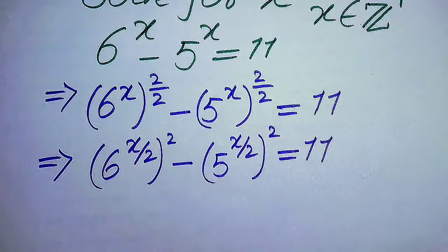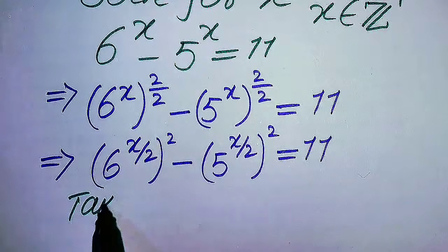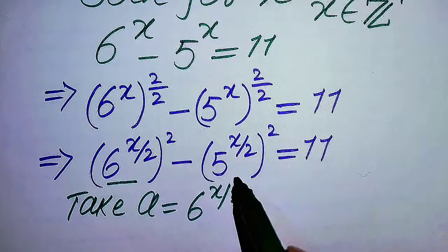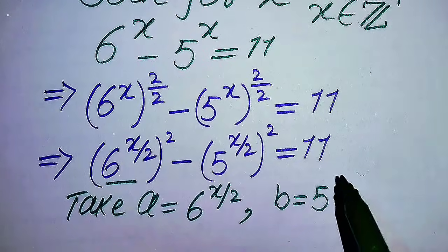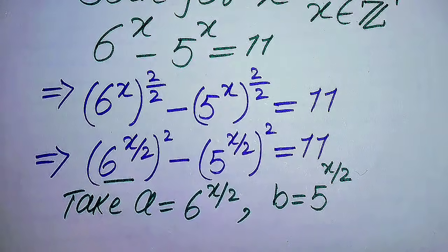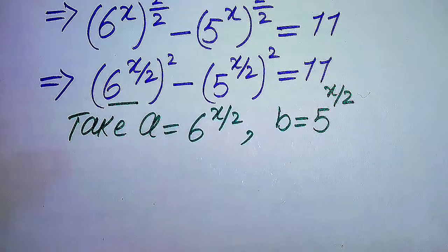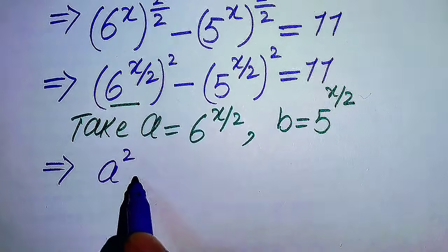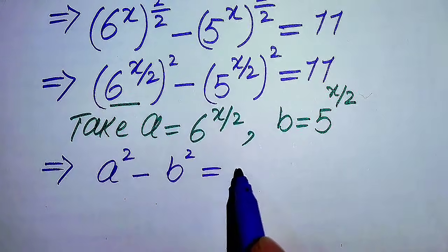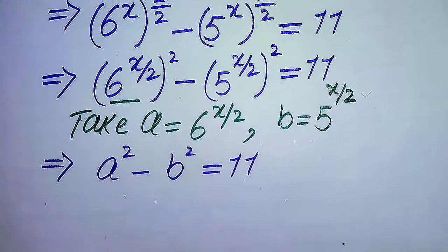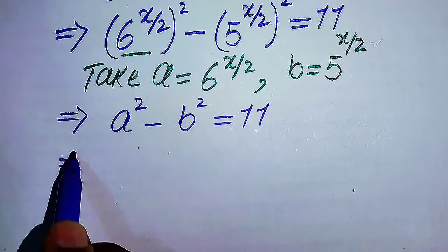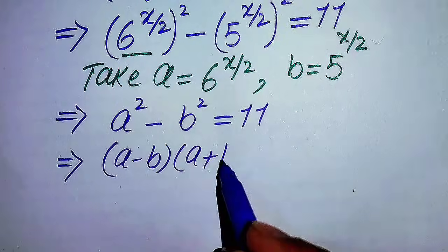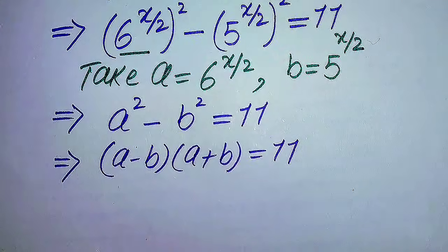Now we convert this exponential equation into a polynomial of two variables. We let a equal 6 to the power of x over 2, and b equal 5 to the power of x over 2. Substituting into the equation gives a squared minus b squared equals 11. We then apply the famous algebraic identity: a squared minus b squared equals (a minus b)(a plus b), so we have (a minus b)(a plus b) equals 11.